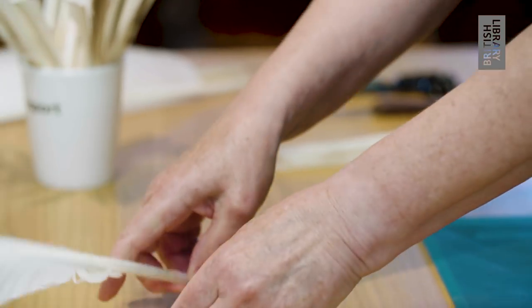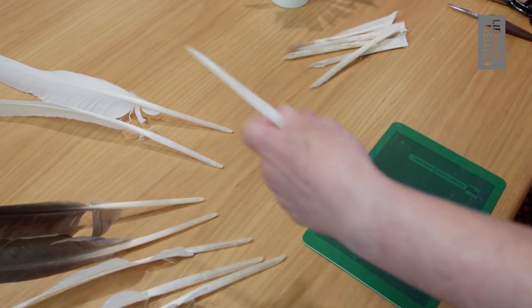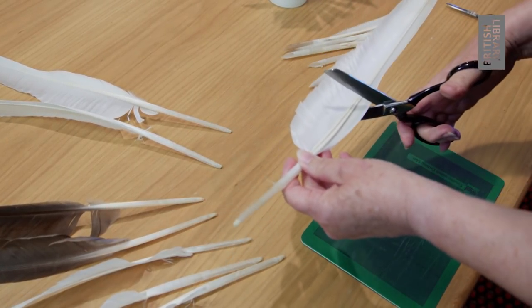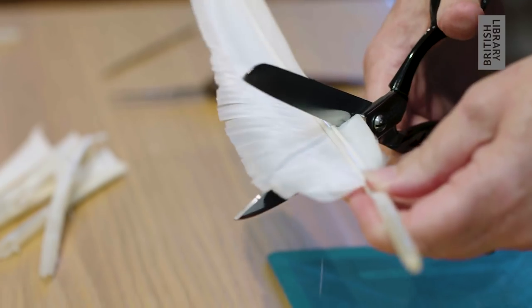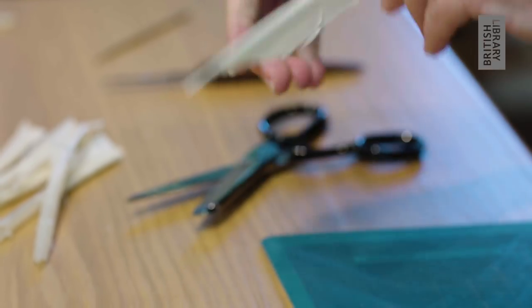The feathers are first of all cut, using a knife or scissors, to about eight or nine inches, because this is the length of a pen. If they're not cut, then the whole length of a feather gets in the way.